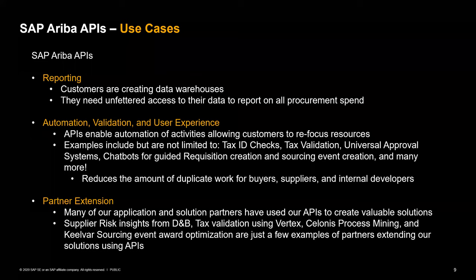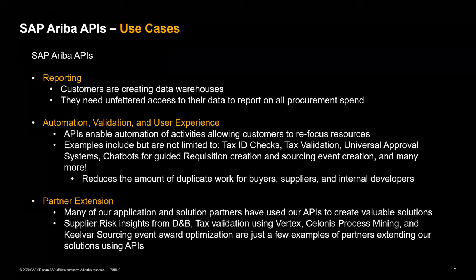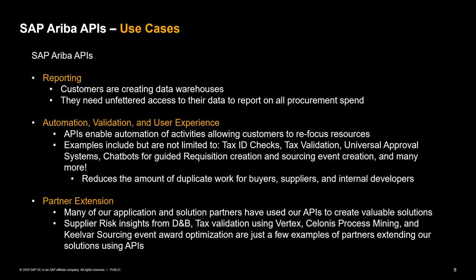Lastly, many partner extensions are built using our APIs. We have supplier risk insights APIs that grab information from Dun & Bradstreet to enhance existing supplier risk information, tax validation using Vertex or Thomson Reuters, Celonis process mining, and Keelvar sourcing event optimization. There are a number of different partner logos, each serving very different purposes, such as reading an invoice and uploading it into the system.